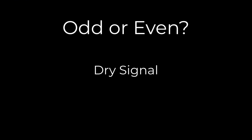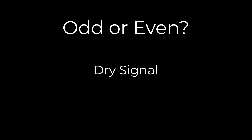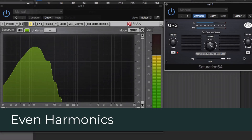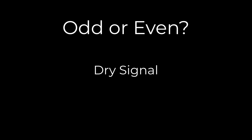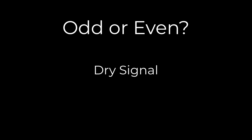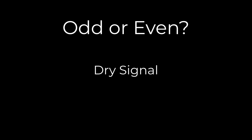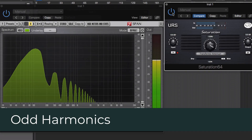Here's a quick comparison with a sine wave. The even sounds very round and pure, whereas the odd sounds much more aggressive and changes the timbre of the sound a lot more, and it begins to sound a little bit more like a reed instrument.